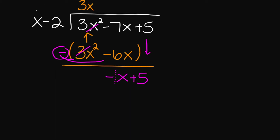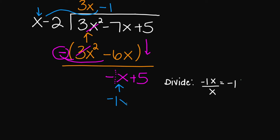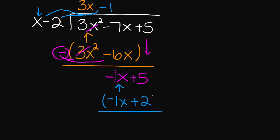So 3x squared minus 3x squared cancels out, and then we have negative 7x plus 6x, which gives us negative x. Then I'm going to bring down my 5. Now let's go back to our divisor. What number do I need to multiply my x with that's going to give us negative x? That's going to be negative 1. Negative 1 times x gives us negative 1x, and then negative 1 times negative 2 gives us a positive 2. Now we subtract, and the minus sign applies to all terms inside: negative 1x plus 1x cancels out. We have 5 minus 2, which equals 3. So your remainder is 3.